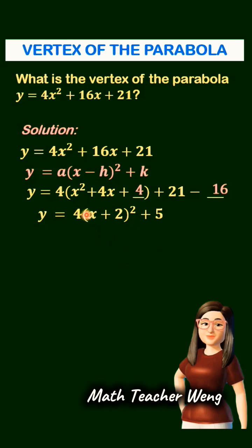Why? Because the square root of x squared is x. The square root of 4 is 2. We copy that plus sign in the middle. So we get x plus 2 quantity squared.